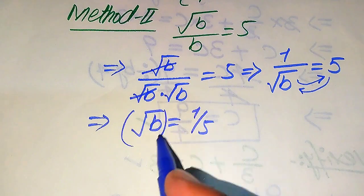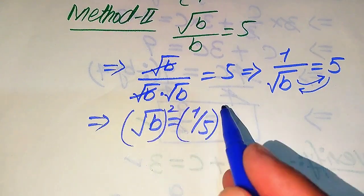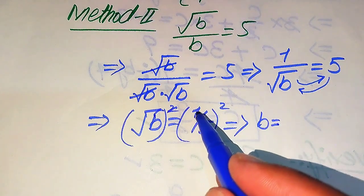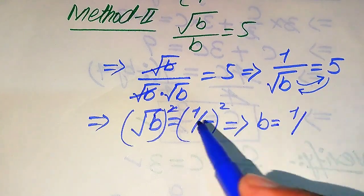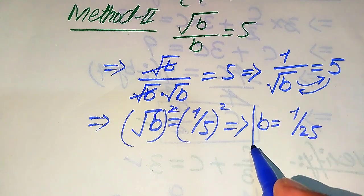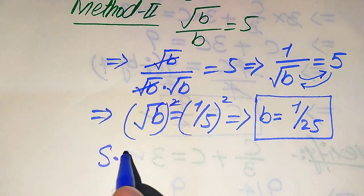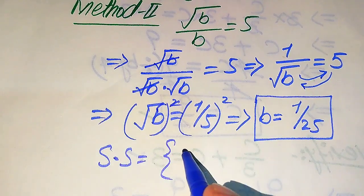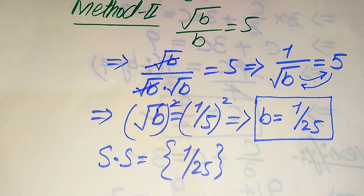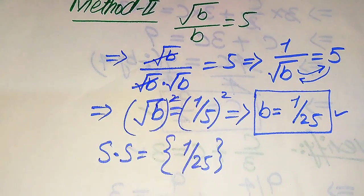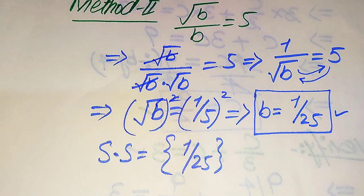We move square root of B to the right hand side and 5 to the left hand side, getting square root of B equals 1 over 5. Squaring both sides eliminates the square root, giving B equals 1 squared over 5 squared equals 1 over 25. This confirms the solution set is {1/25}. Thank you for watching — please subscribe for more exciting videos.